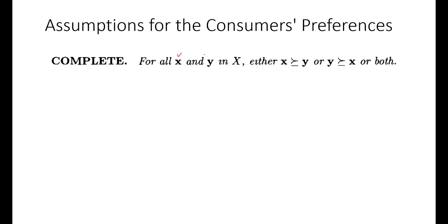Bundle x and bundle y belong to the consumption set. The assumption about x and y is that either the consumer would prefer x to y, or he would prefer y to x, or he will be indifferent between the two. He would go for one option or the other, or both options simultaneously.